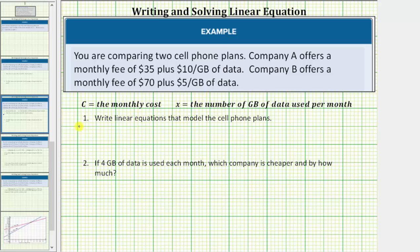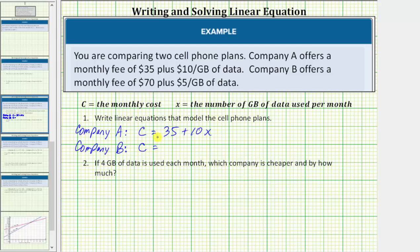For Company A, the monthly cost C is equal to $35 plus $10 per gigabyte of data, and therefore we have C equals 35 plus 10x. For Company B, the monthly cost C is equal to $70 plus $5 per gigabyte of data, and therefore we have C equals 70 plus 5x.